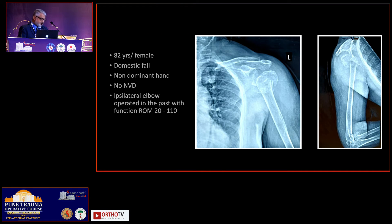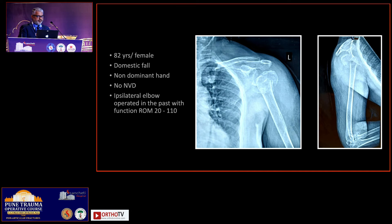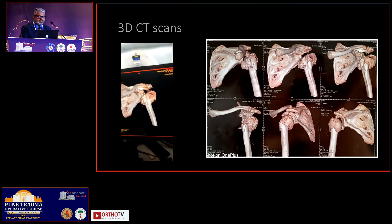A quick one to follow up — we have about five minutes. 82-year-old female, domestic fall, non-dominant hand, no neurological deficit, has been operated in the past for an ipsilateral elbow fracture, and has a functional range of around 20 to 110 degrees. I will show you the CT images quickly across the panel — these are the CT images.